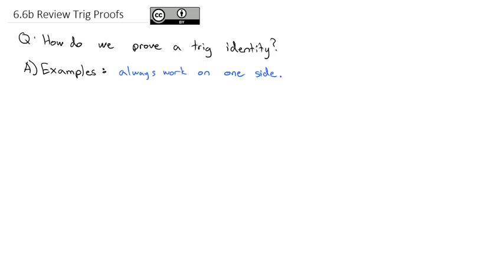We can't do things to both sides of the equation. We can't simplify one side a bit and simplify the other side a bit. We have to always work on one side to try and end up with the other side.